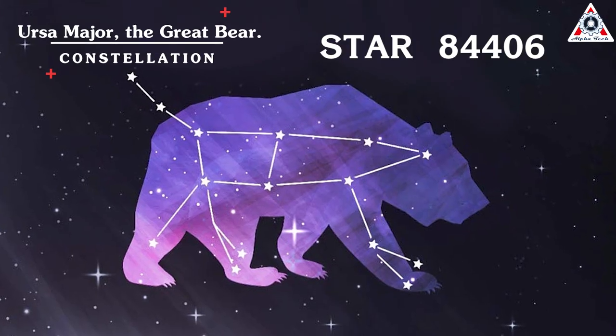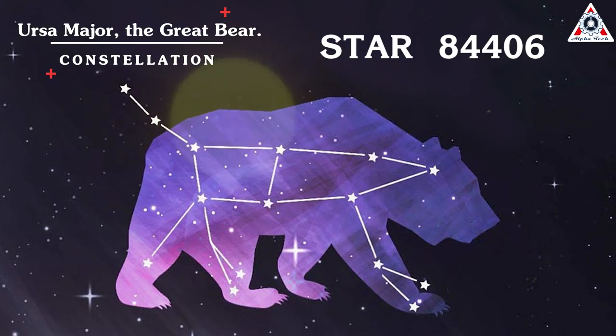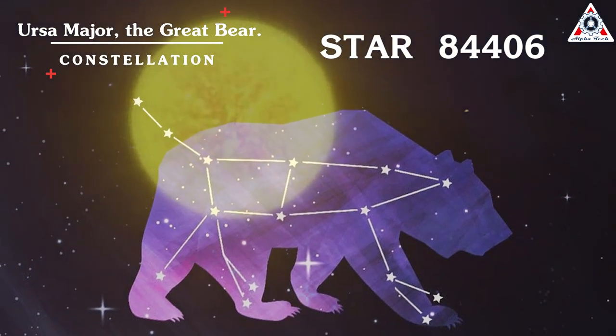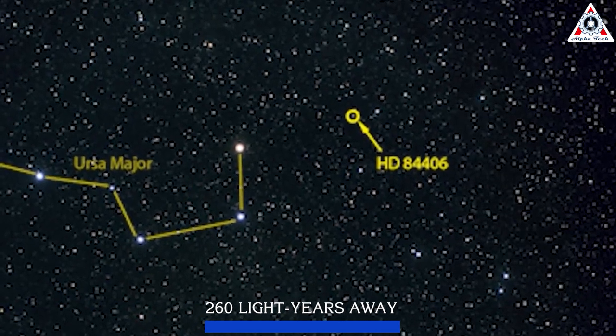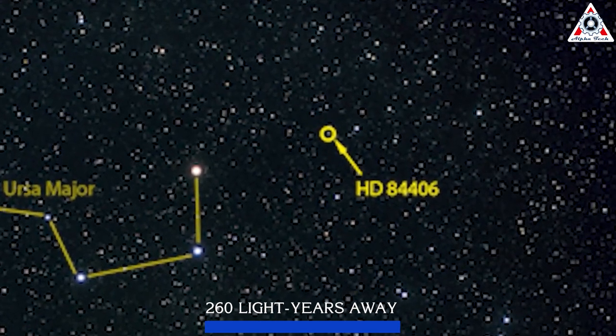It's located in the constellation of Ursa Major, the Great Bear. It's a sun-like star that is similar in size and brightness, about 260 light-years away, and is too dim to be seen with the naked eye.